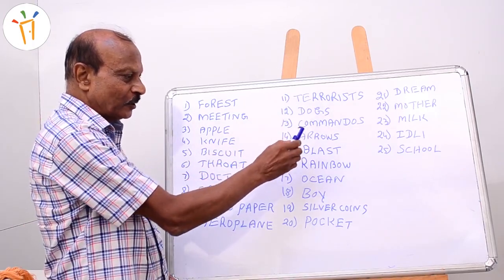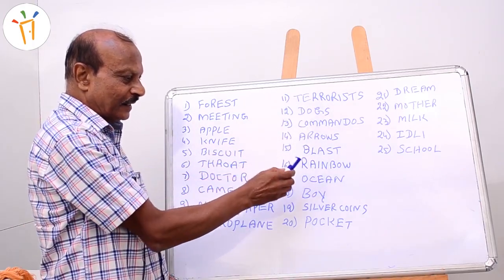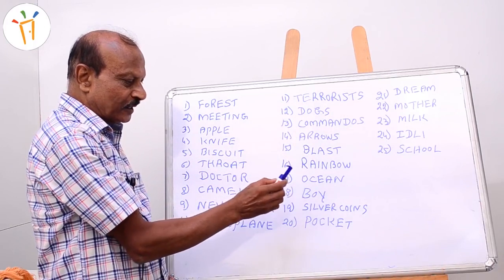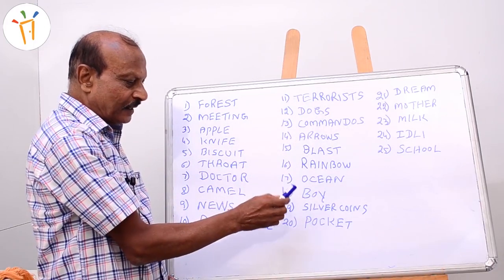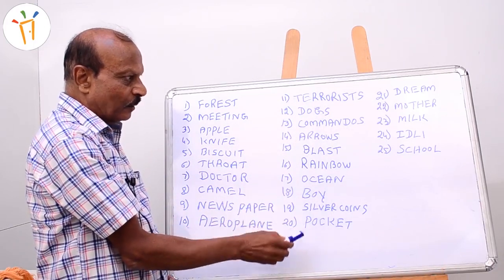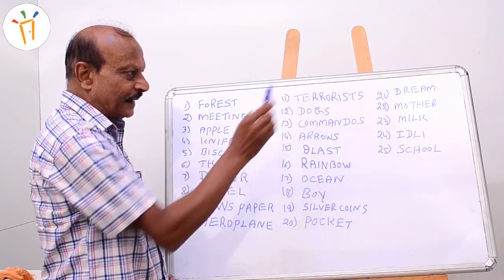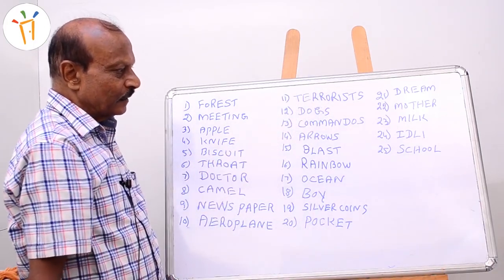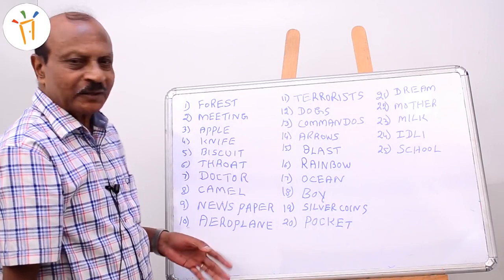Continuing the list: dogs, commandos, arrows, blast, rainbow, ocean, boy, silver coins, pocket, dream, mother, milk, idli, school.